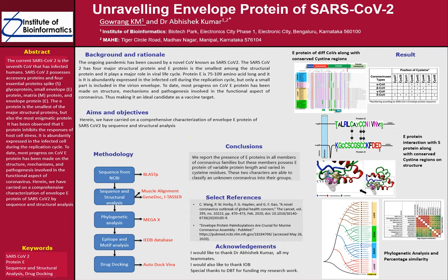From our analysis, we found that protein E is present in all four different genera of coronavirus and is made up of three domains: N-terminal, transmembrane, and C-terminal.